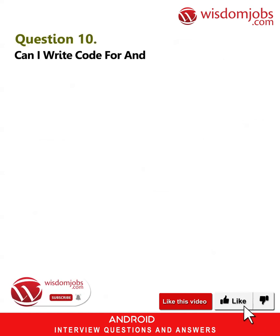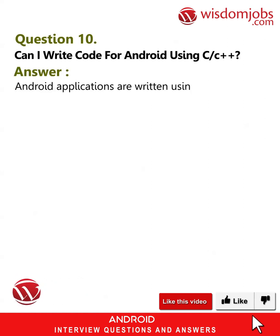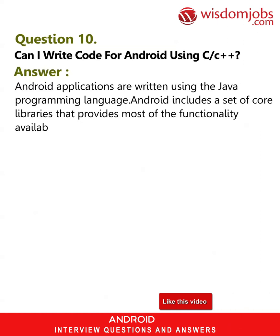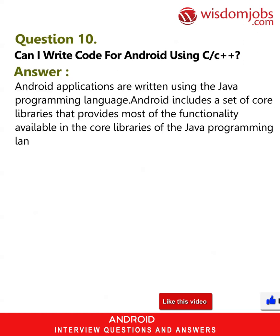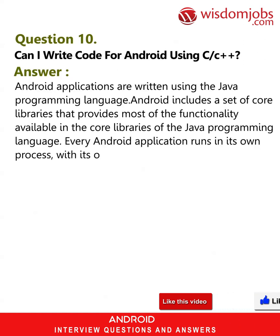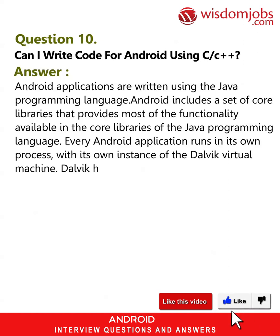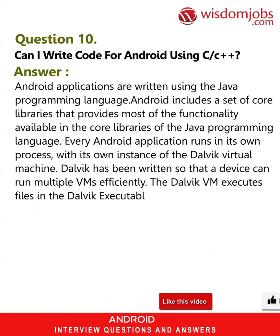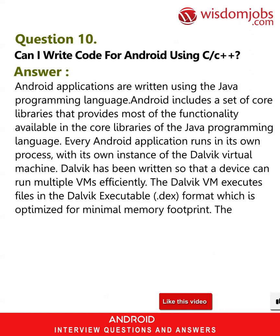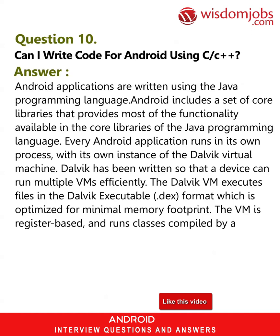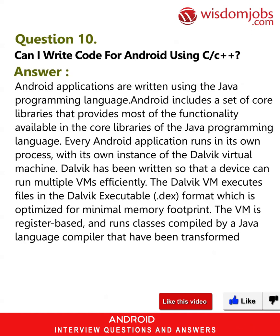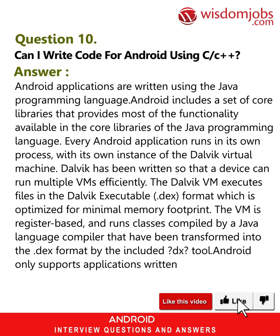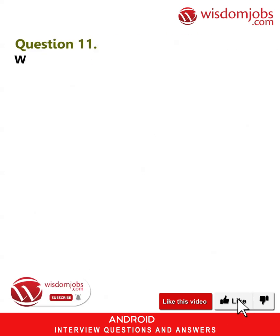Question 10: Can I write code for Android using C/C++? Answer: Android applications are written using the Java programming language. Android includes a set of core libraries providing most functionality available in the core Java libraries. Every Android application runs in its own process with its own Dalvik VM instance. Dalvik is written so that a device can run multiple VMs efficiently, executing .dex files optimized for minimal memory footprint. The VM is register-based and runs classes compiled by a Java compiler and transformed into dex format by the DX tool. Android only supports applications written using Java at this time.